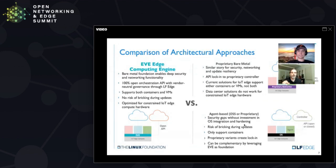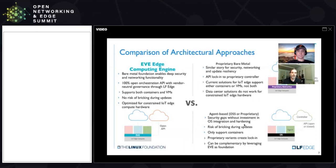Looking at the alternatives today, there are a number of proprietary bare metal solutions. You can get some similar benefits because you've got that lower-level hardware access, but you will be locked in to only the controller supported with that abstraction layer. Also, all the solutions we see today are really focused at data center class equipment, not stuff distributed out in the wild that's more constrained. Another option is taking an OS, putting an agent on top, but if you don't do a lot of integration between the agent and the OS, you're very likely going to break that device out in the field.